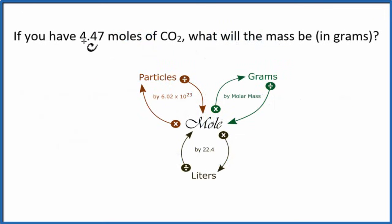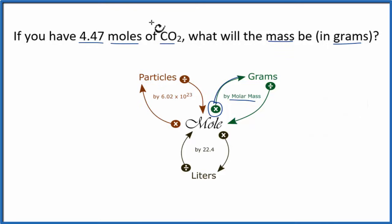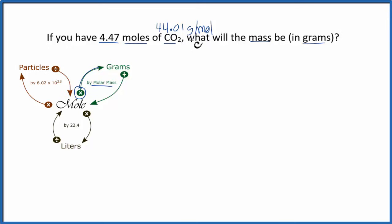In this problem, I have 4.47 moles of CO2, and I'm trying to find the mass, and the mass is in grams. So I'm going from moles to grams. I'm multiplied by the molar mass, and the molar mass for CO2 is 44.01 grams per mole. So I can see that if one mole is 44 grams, four moles is like four times that, so somewhere around 200 grams would be a good estimate.